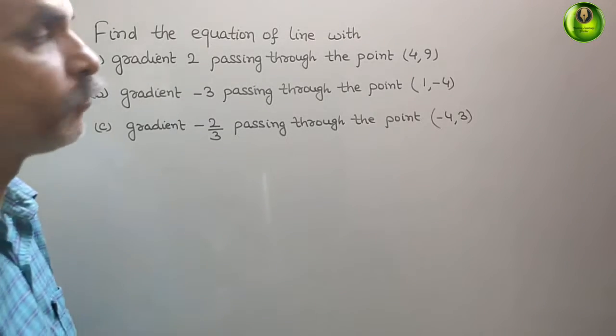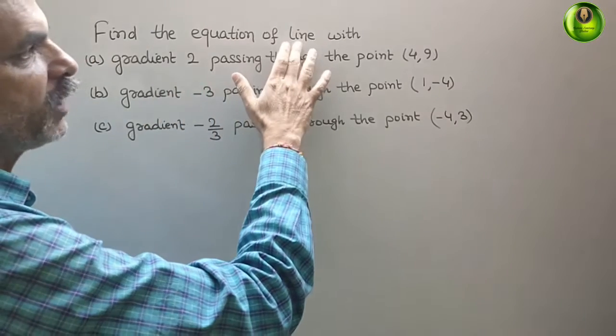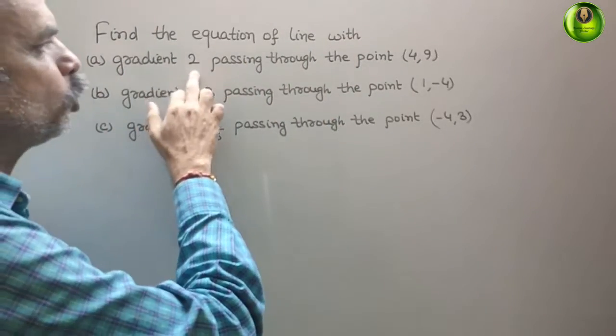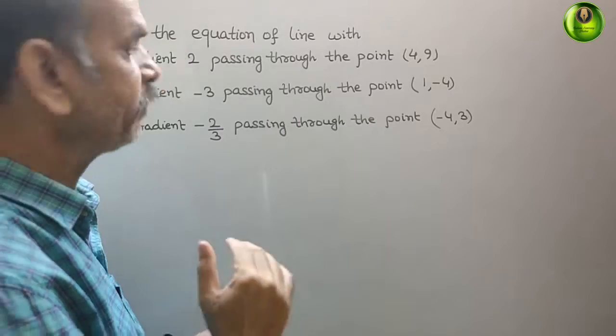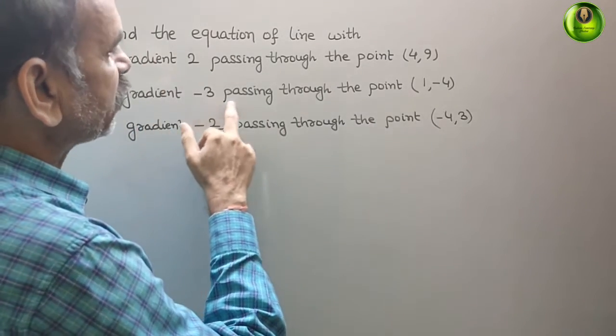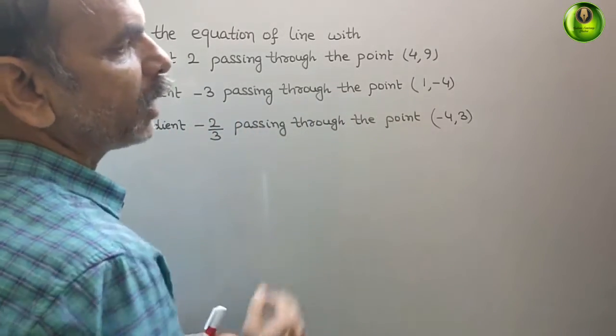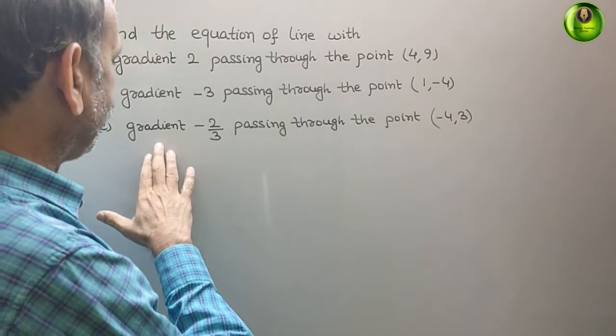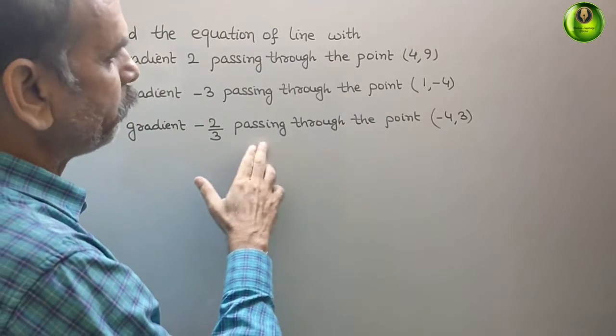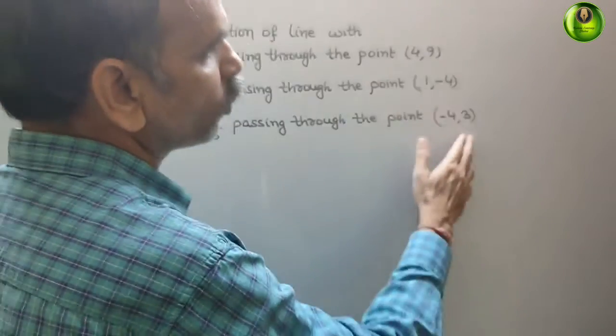Your question is, find the equation of the line with gradient 2 passing through the point (4,9). Second, gradient minus 3 passing through the point (1, minus 4). Third, gradient minus 2 by 3 passing through the point (minus 4, 3).